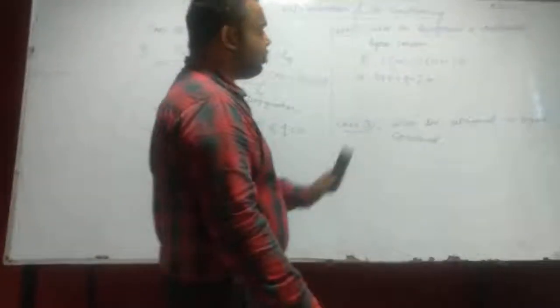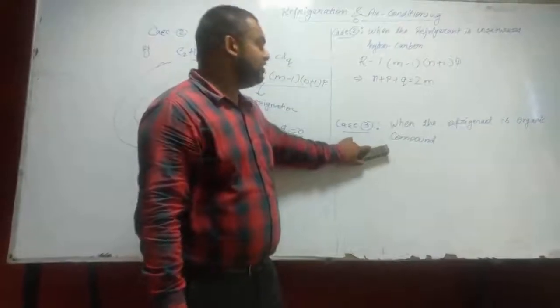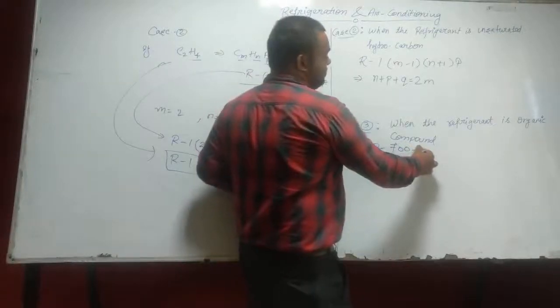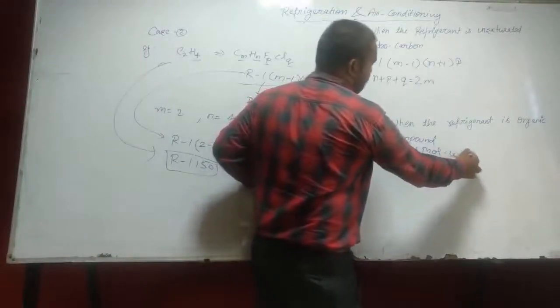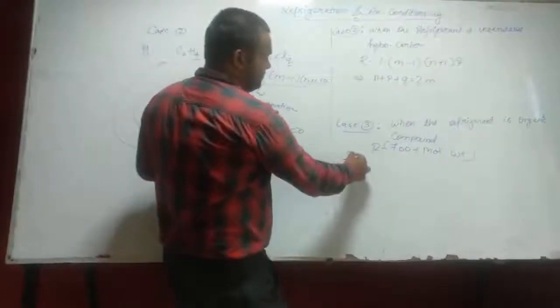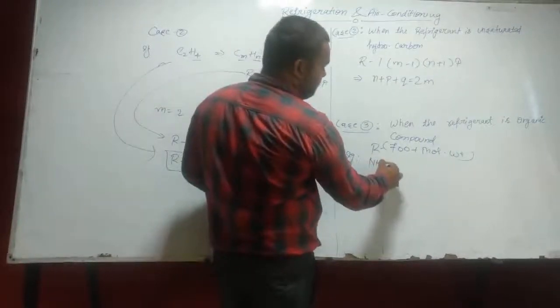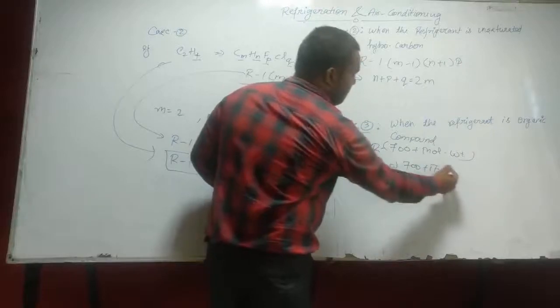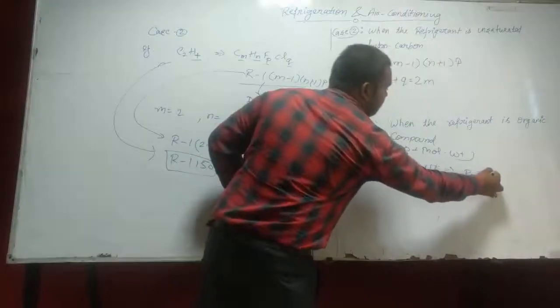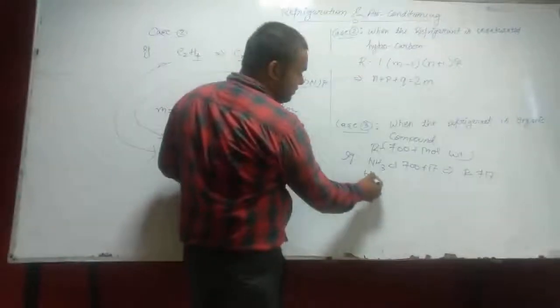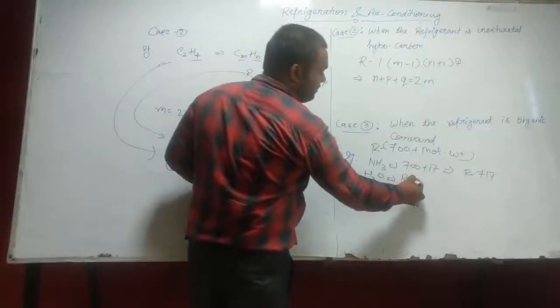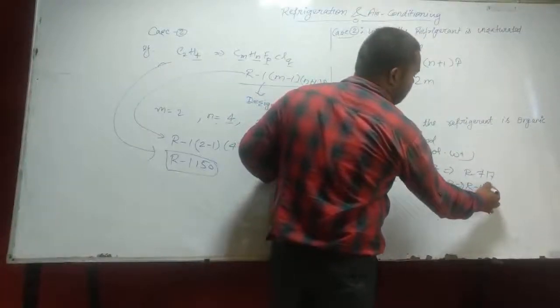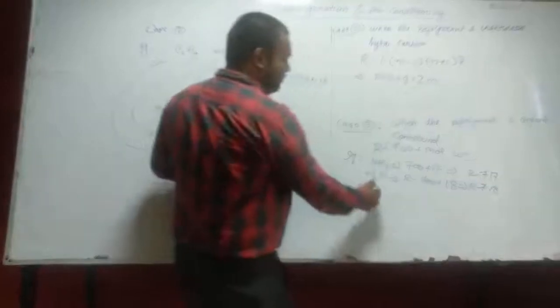Now move to case 3, and the refrigerant is organic compound. The designation of this case is R700 plus molecular weight. The example of this is NH3, 700+17. So NH3 designation is R717. And for water, R700+18, R718.